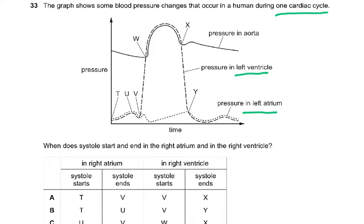What we need to understand concerns the pressure in the left atrium. When does systole start in the right atrium? It starts at point T, and systole ends at point V. In the right ventricle, the systole starts at V and ends at X. The answer is A — but you've got to understand why.